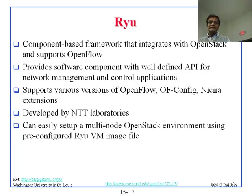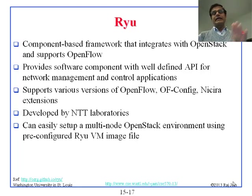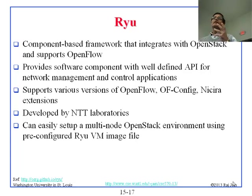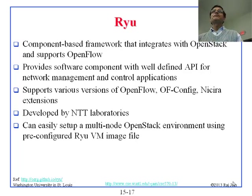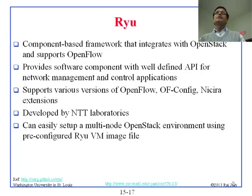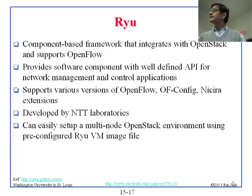You can easily set up a multi-node OpenStack environment using a pre-configured RYU VM image file. This is true for most things we've talked about — including Quagga, MiniNet, and everything else — in that everything nowadays comes as a VM appliance. You download the file, run it on one of the hypervisors, and you have it going. RYU runs on an appliance image file.